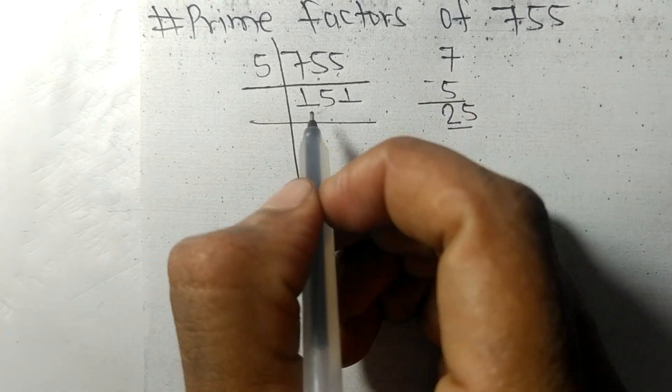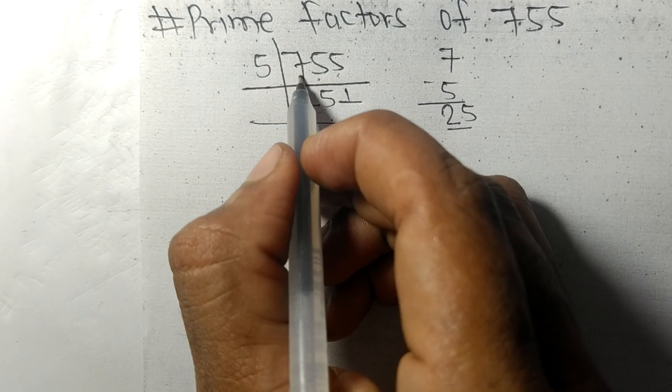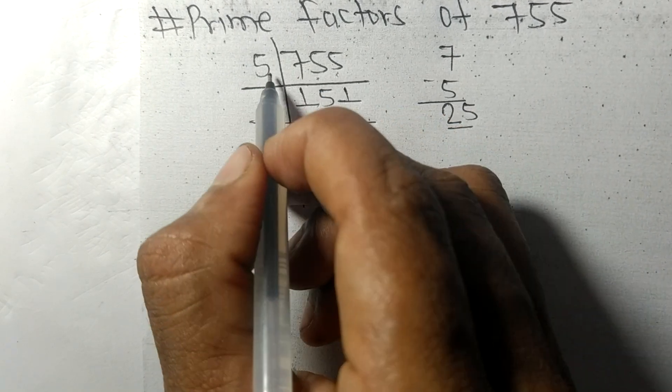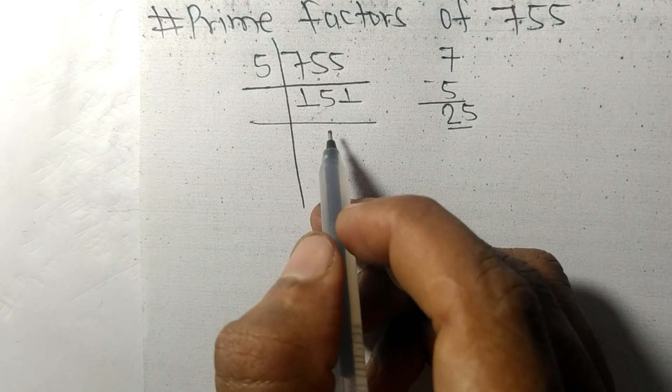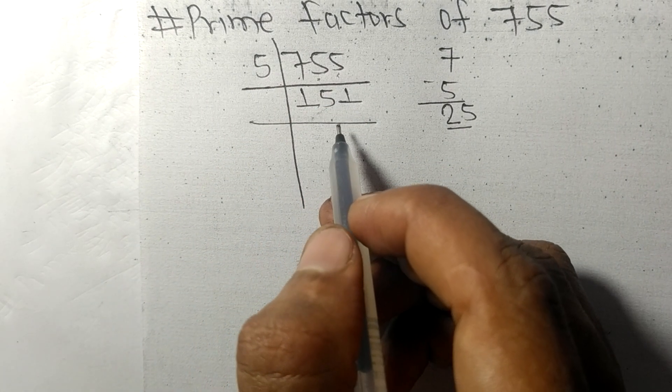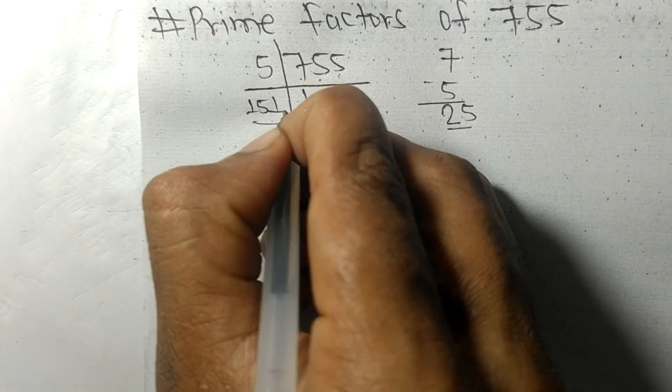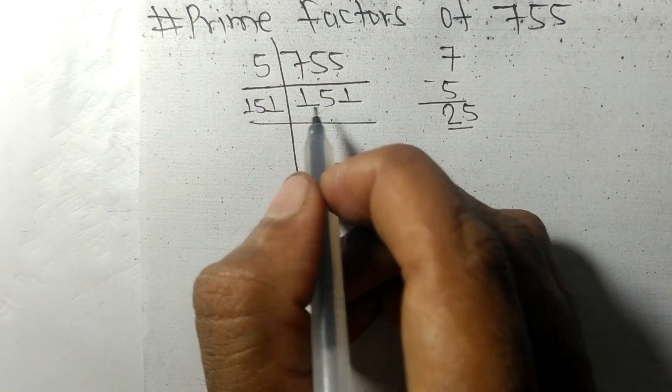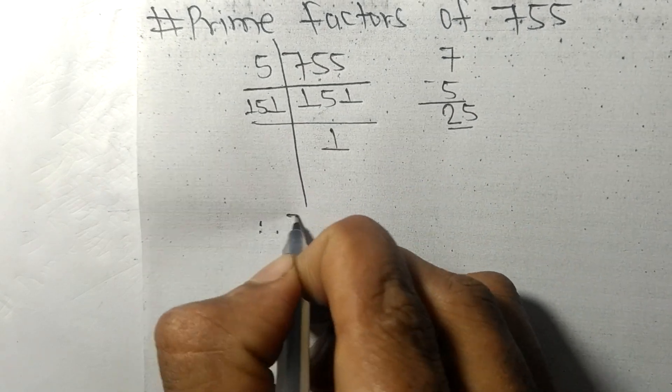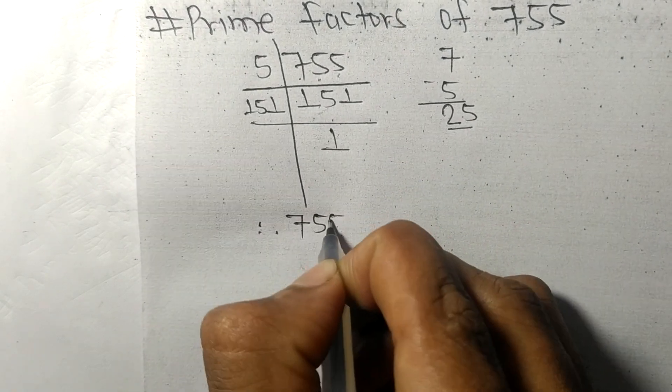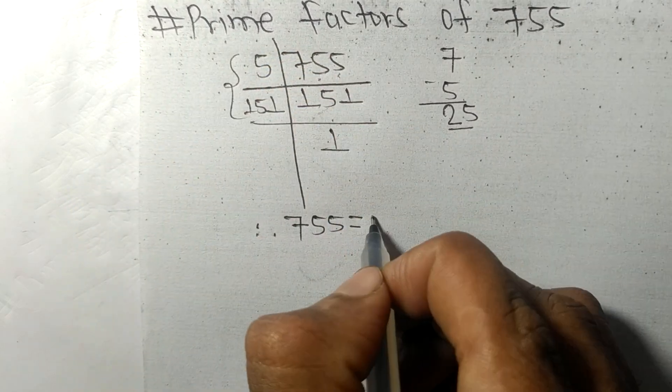We got 151 on dividing 755 by 5. Now 151 is a prime number, so it is exactly divisible by 151 only. On dividing we got 1. Therefore, 755 is equal to, from this side it is 5 times 151, and from here it is 1.